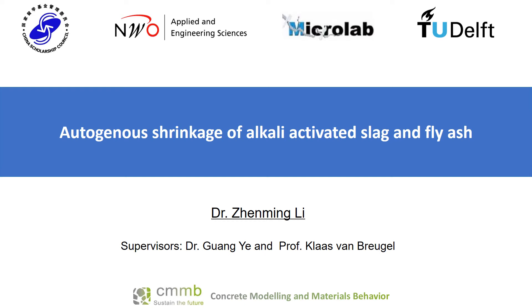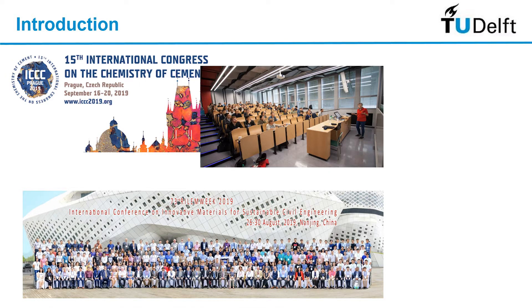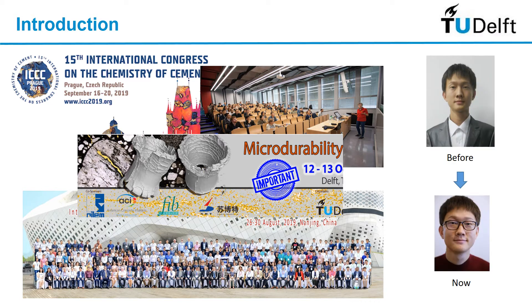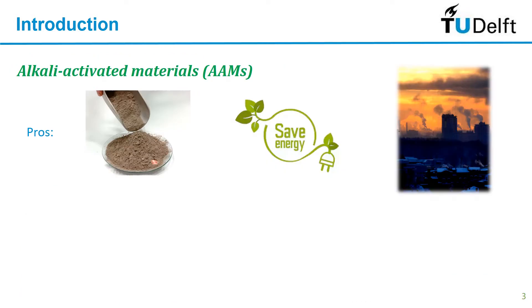Good afternoon everyone. In the next 13 minutes I'm going to talk about autogenous shrinkage of alkali-activated slag and fly ash. My name is Jenming Lee. We are studying alkali-activated materials — we try to reuse industrial by-products like slag and fly ash — and we know the production of this kind of material will save energy and also induce lower CO2 emissions compared with the production of Portland cement.